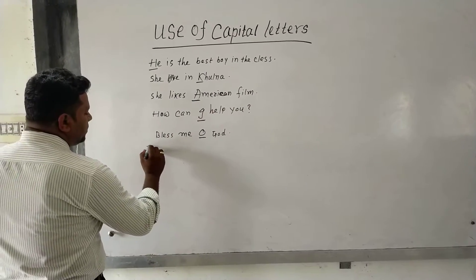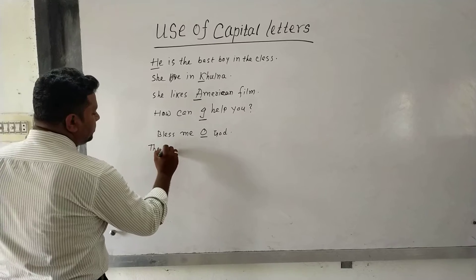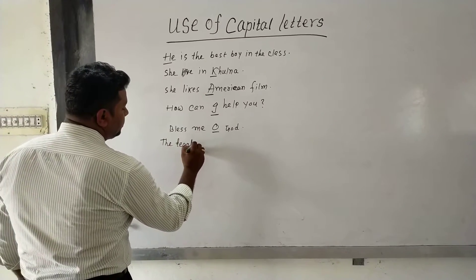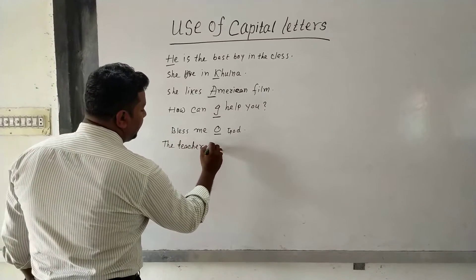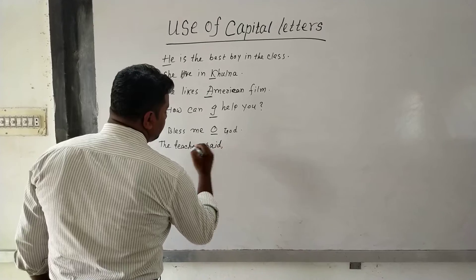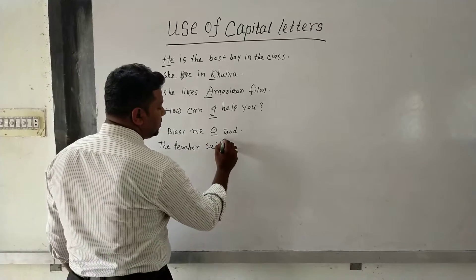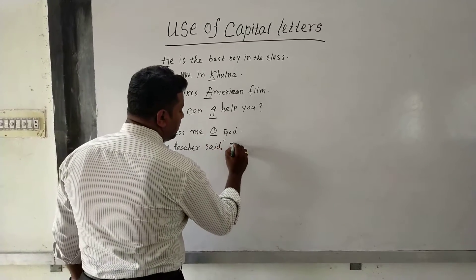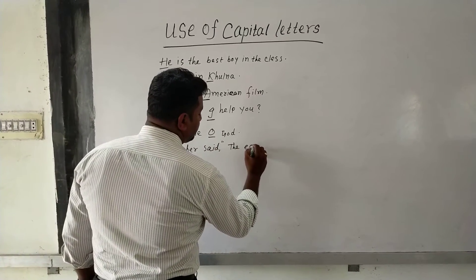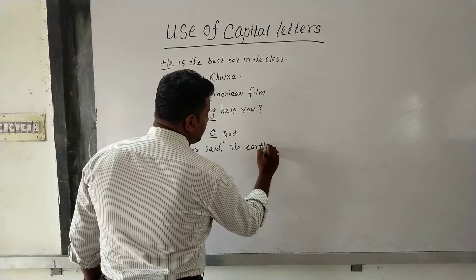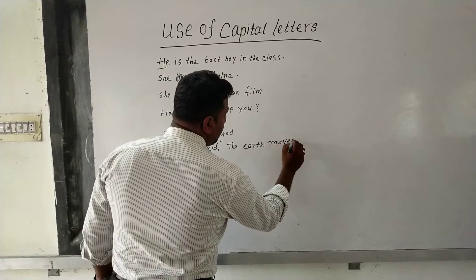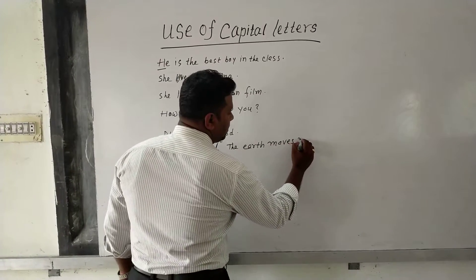Rule four: direct speech always begins with capital letters. For example, 'The teacher said, "The Earth moves round the Sun."'